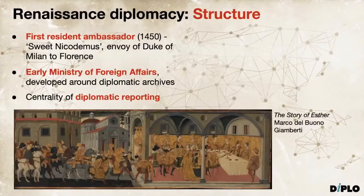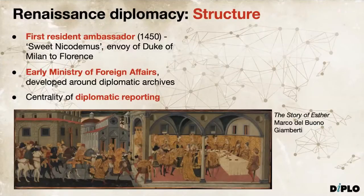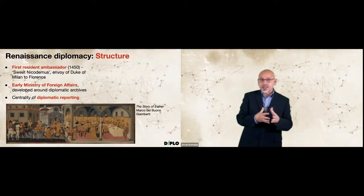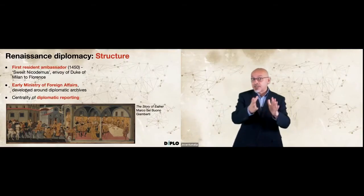How was diplomacy practiced? What was the structure of Renaissance diplomacy? It is widely accepted in the study of diplomatic history that the first permanent diplomatic mission was established in 1450, representing the Duke of Milan to Cosimo de' Medici of Florence. The first envoy was Nicodemo di Pontremoli, known as 'sweet Nicodemus.' Italian Renaissance diplomacy was commercially driven, and Italian diplomats were often bankers or traders. Among diplomats, there were also well-known names such as Dante, Petrarca, and Boccaccio in the 14th centuries, and Machiavelli or Guicciardini in the early 16th centuries.